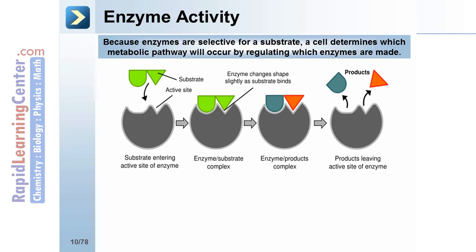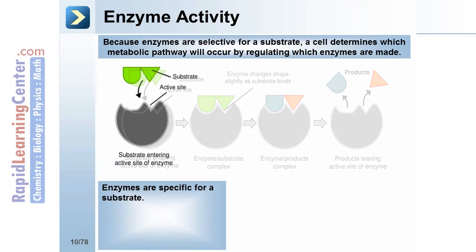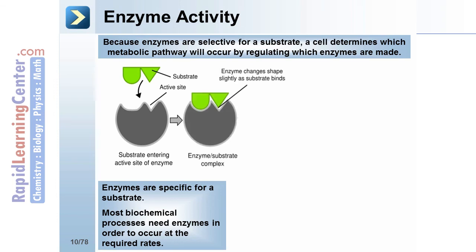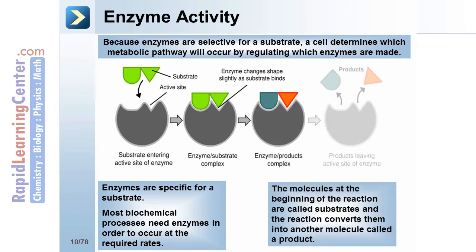Enzyme activity: Because enzymes are selective for a substrate, a cell determines which metabolic pathway will occur by regulating which enzymes are made. Most biochemical processes need enzymes in order to occur at the required rate. Here we see the substrate entering the active site of the enzyme and an enzyme-substrate complex — abbreviated ES — being formed. The enzyme changes shape slightly as the substrate binds. The molecules at the beginning of the reaction are called substrates and they get converted into the product. Products leave the active site of the enzyme because they no longer have the correct conformation.